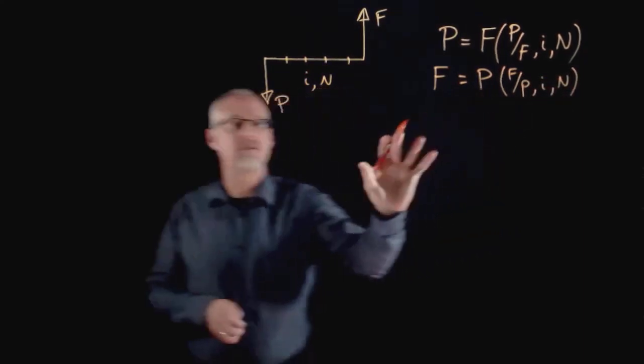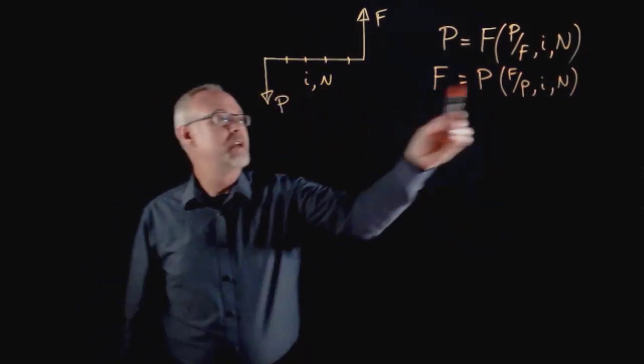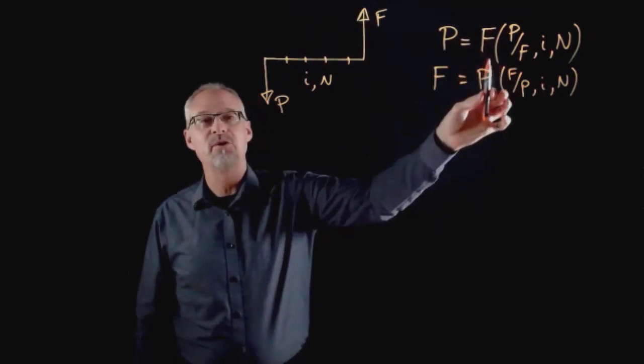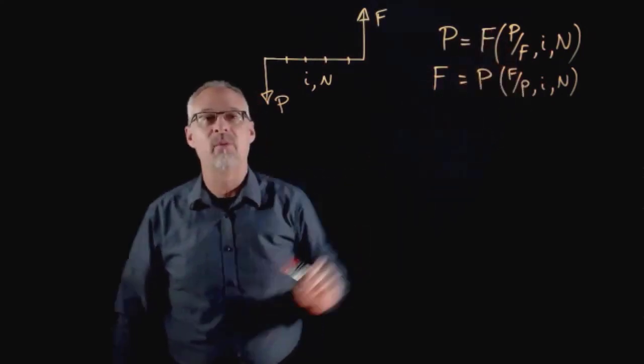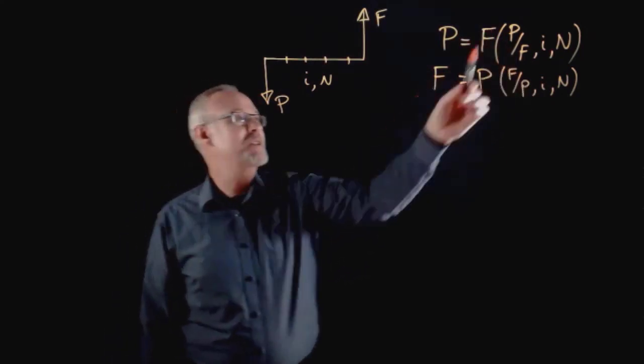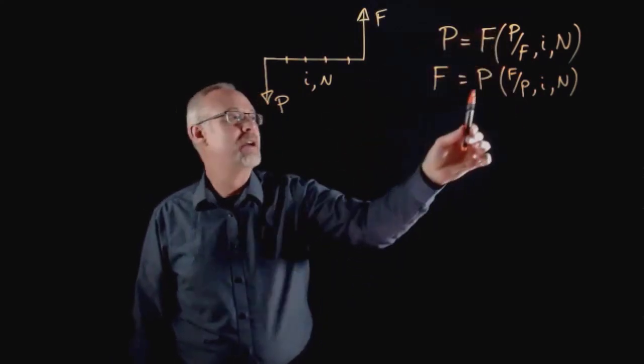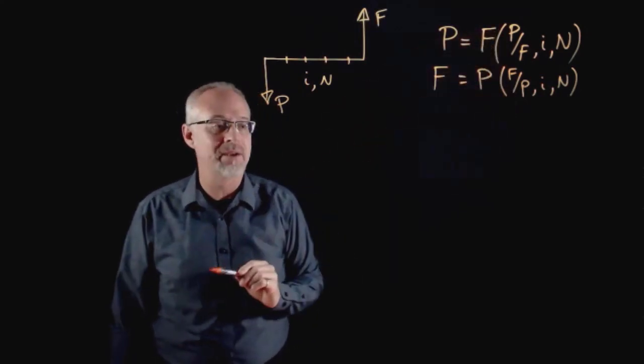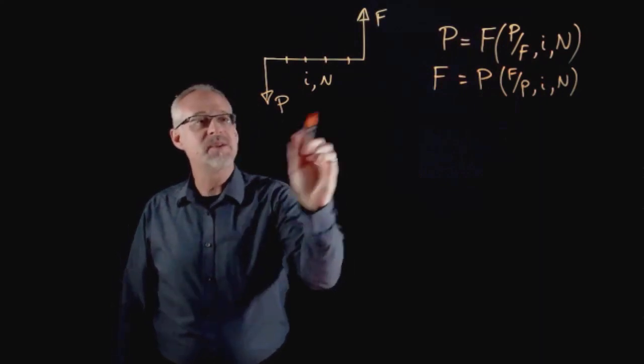The trick for making sure you're using the right factor is to think of this almost as a fraction and think, in this case, the F's canceling to give a P, in this case the P's canceling to give an F.